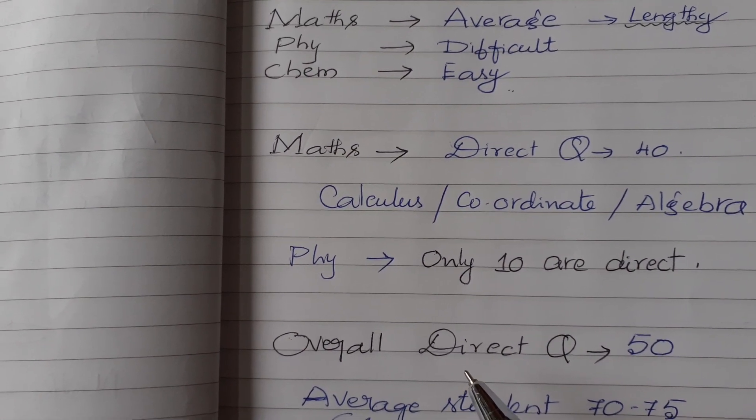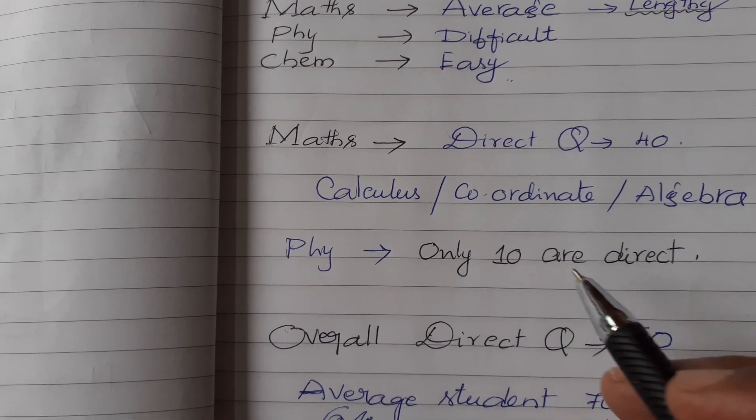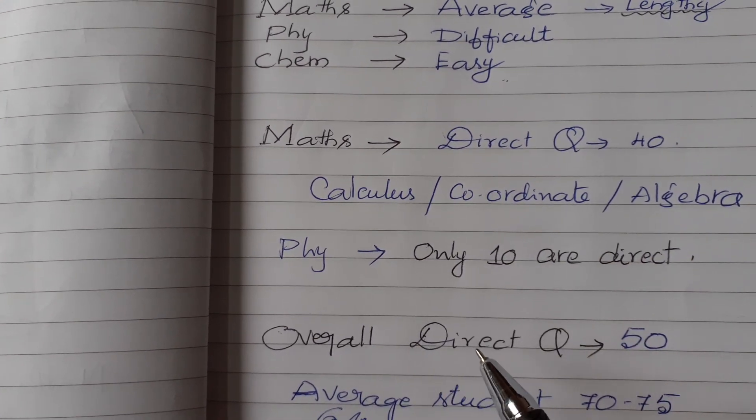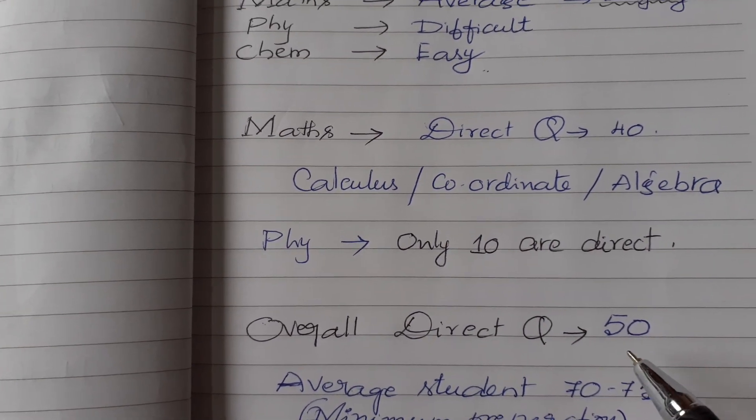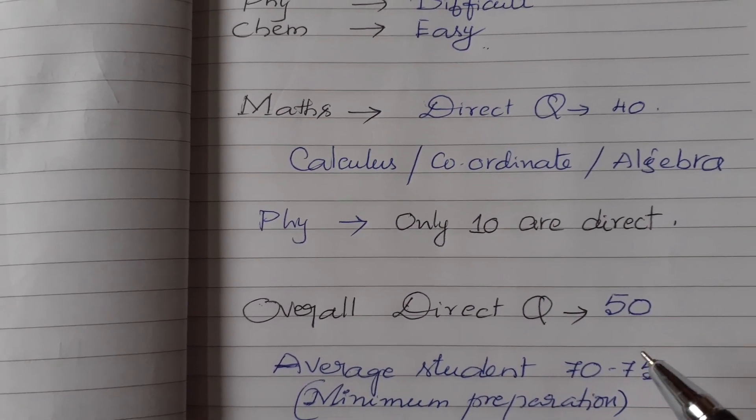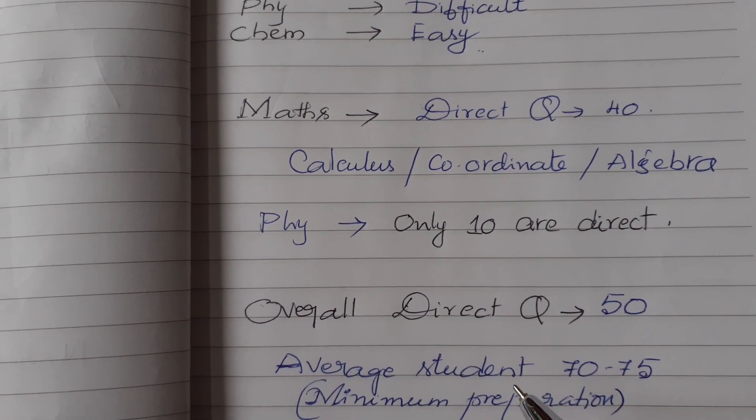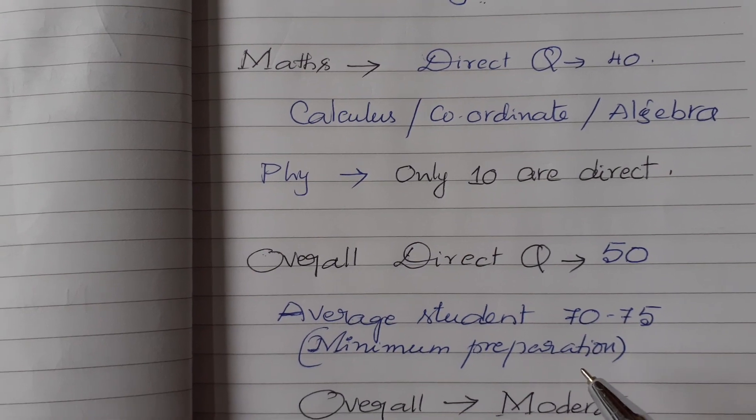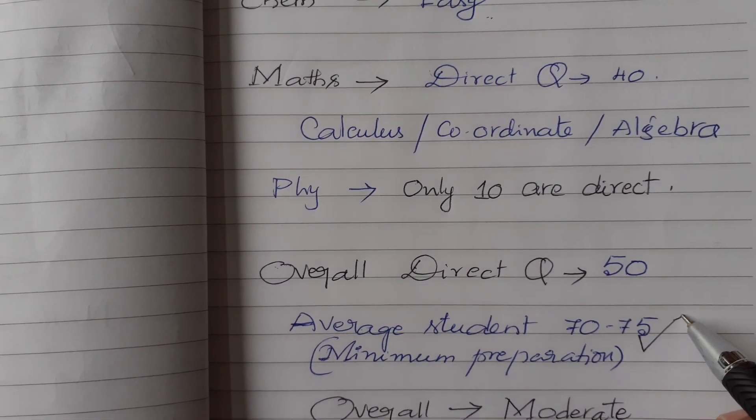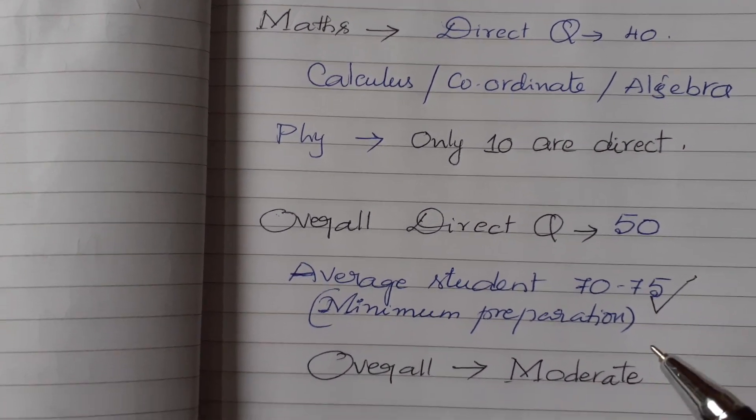And overall, altogether direct questions are 50, 45 to 50 are direct questions out of 160. And an average student with minimum preparation can score 70 to 75 marks.